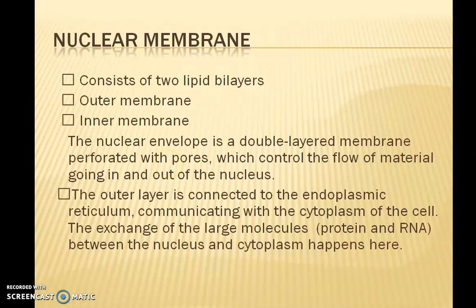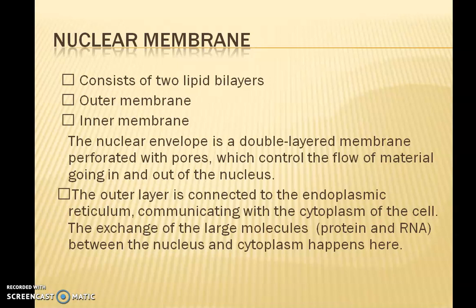The first component is the nuclear membrane. It is a lipid bilayer, the same as that found in the plasma membrane or any other membrane of the cell organelles. It has an outer membrane and an inner membrane. The nuclear envelope is a double layer that is perforated with several pores. These pores help in the communication and transport of materials in and out of the nucleus — that is the function of nuclear pores.